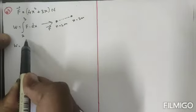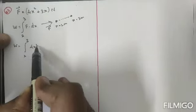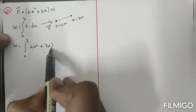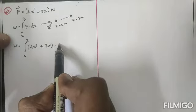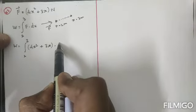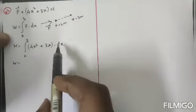So now let's apply the force value. Therefore work done is equal to integral from 2 to 3, instead of this F value we can write 4x² + 3x, then into, that is the displacement, so the displacement is dx, so with respect to x we want to differentiate.